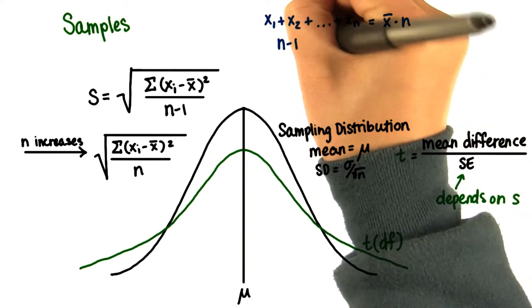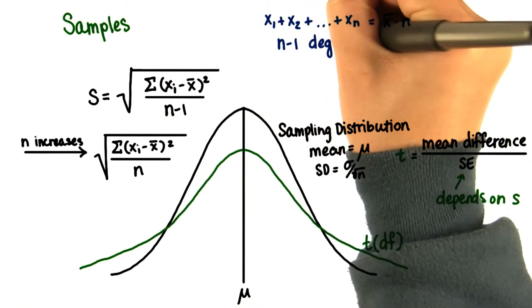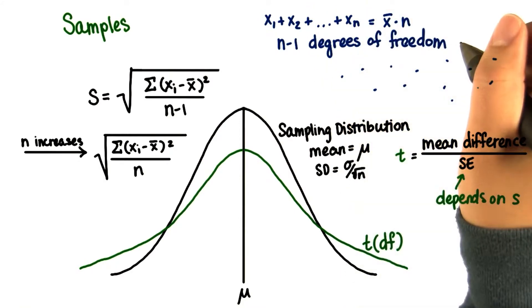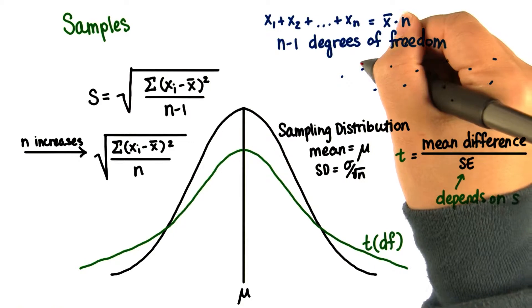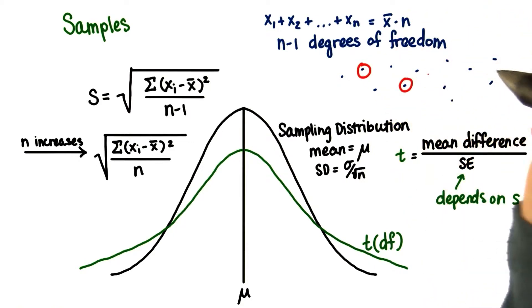where you have n values that must add to 10. In that case, you had n minus 1 degrees of freedom, and the same applies here. In our population, when we need to pick a sample of size n, we now have a restriction. The nth value has to ensure that they add to x bar times n.